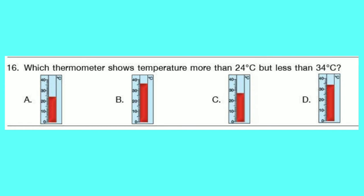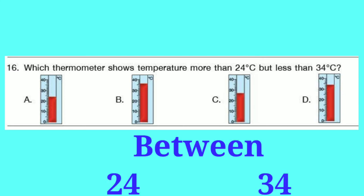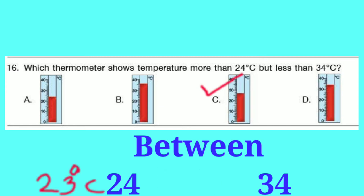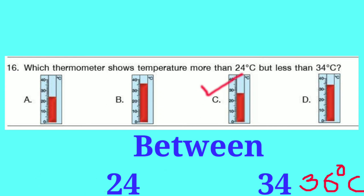Question number 16: Which thermometer shows the temperature more than 24°C but less than 34°C? We have to find the temperature between 24°C and 34°C. The correct option is C — 27°C, which is between 24 and 34°C. Option A shows 23°C and option B shows 36°C — these are not between 24°C and 34°C.